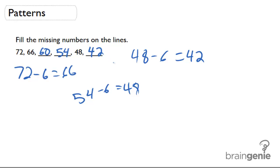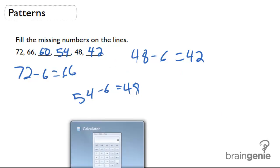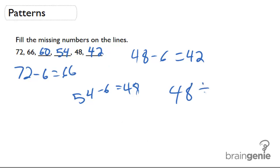What we can do is check and see that when we divide these numbers by 6, we're going to get a multiplication pattern. If we divide 48 by 6, we're going to get 8. And so what we should get when we do 42 divided by 6 is 7.